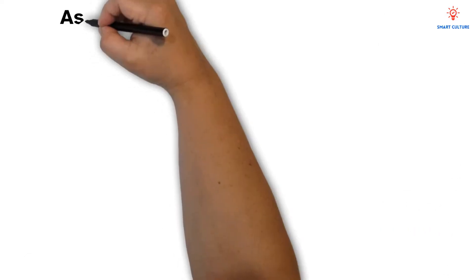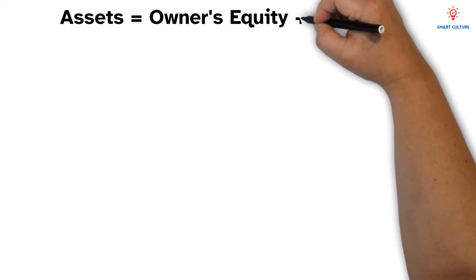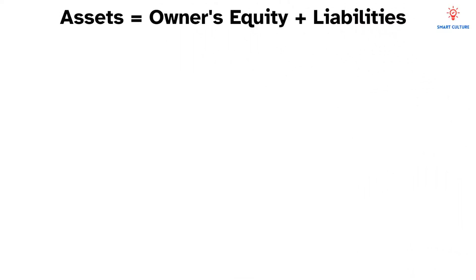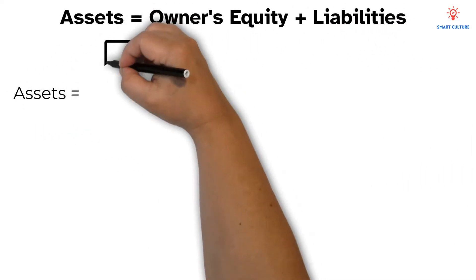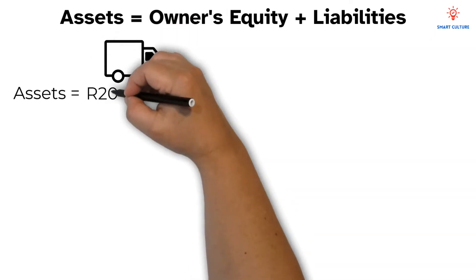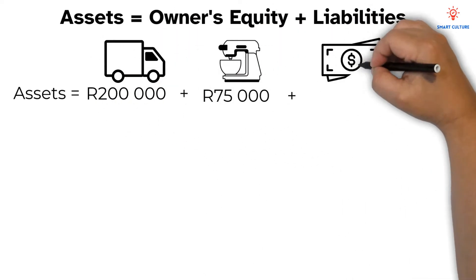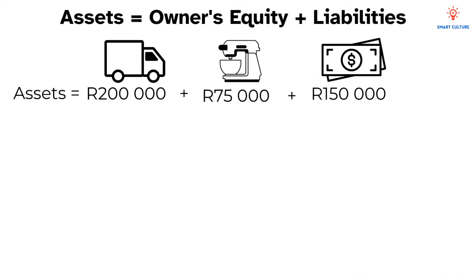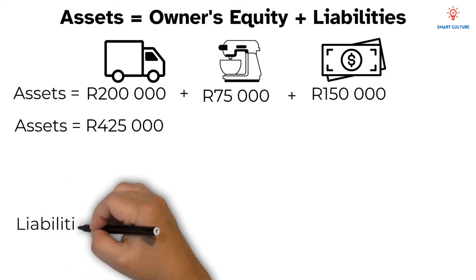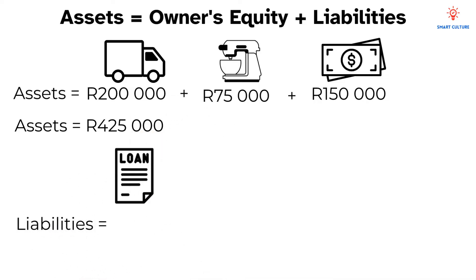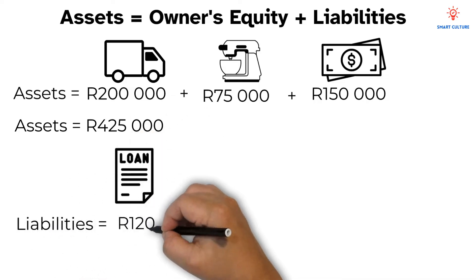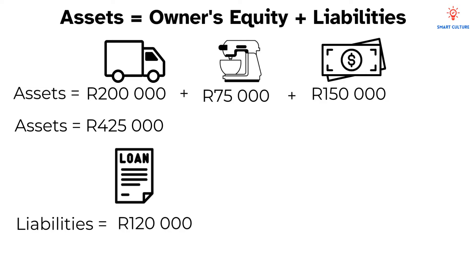Let's calculate Noah's equity using the accounting equation: assets equals owner's equity plus liabilities. The total assets are 200,000 rand plus 75,000 rand plus 150,000 rand, and that is a total of 425,000 rand. The liabilities are 120,000 rand.